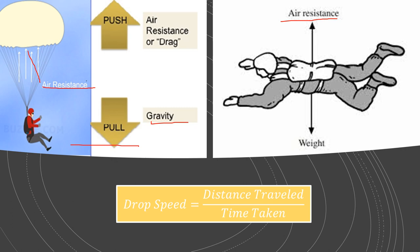But since there is air resistance, you won't keep accelerating. You will reach a point where your velocity and acceleration is constant. And the basic formula for finding the speed at which you drop is speed equals distance traveled by time.